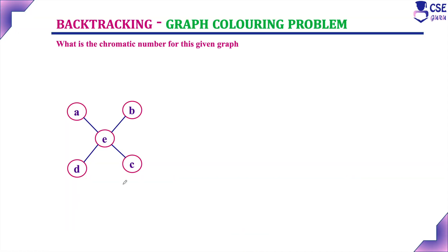For this given graph, there are five vertices. What is the chromatic number for this given graph? The chromatic number is nothing but the minimum number of colors required to color this given graph. The constraint here is that adjacent vertices should not be assigned the same color. That is the main constraint in graph coloring problem.